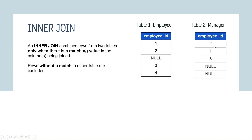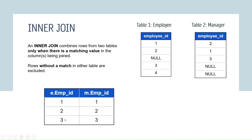Let's compare every employee ID with every manager's employee ID. Employee ID 1 exists in both tables — there is a match. Employee ID 2 also exists in both tables — again a match. For NULL, it is special: NULL never equals NULL in SQL. NULL is considered an unknown value, so there is no match. Employee ID 3 exists in the manager table — a match. Employee ID 4 does not exist in the manager table — no match. So the final inner join output shows only the rows with matching values: 1, 2, and 3.